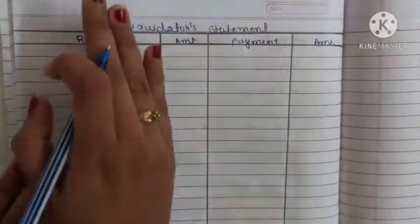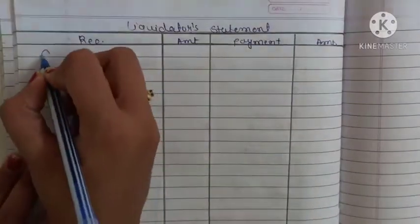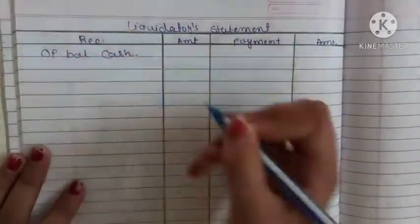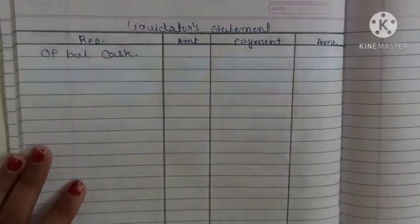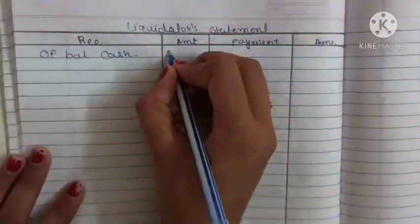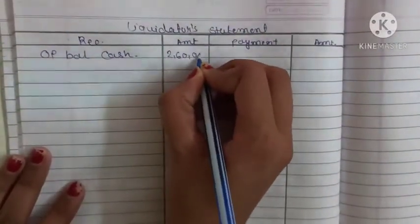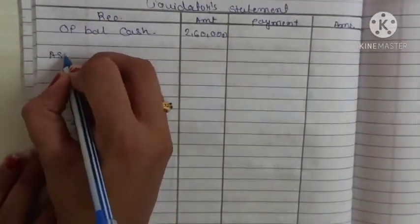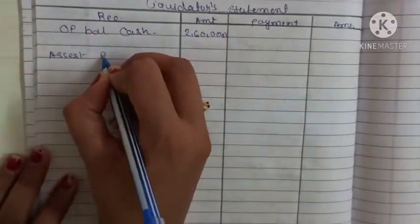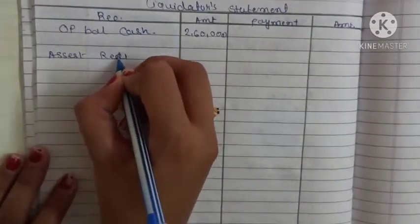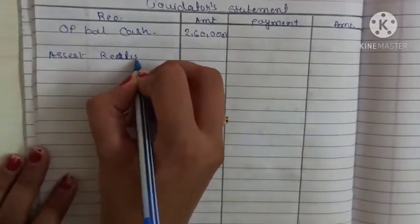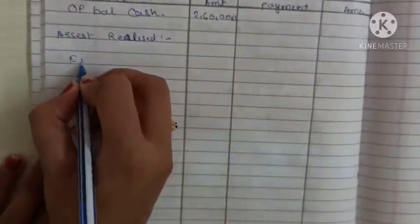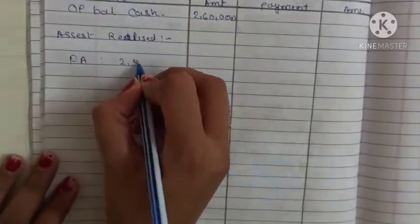First, in the receipt side we will write the opening balance of cash or bank. The opening balance of cash or bank is 2,60,000 — so we write 2,60,000 here. Then asset realized: fixed assets realized are 2,50,000.